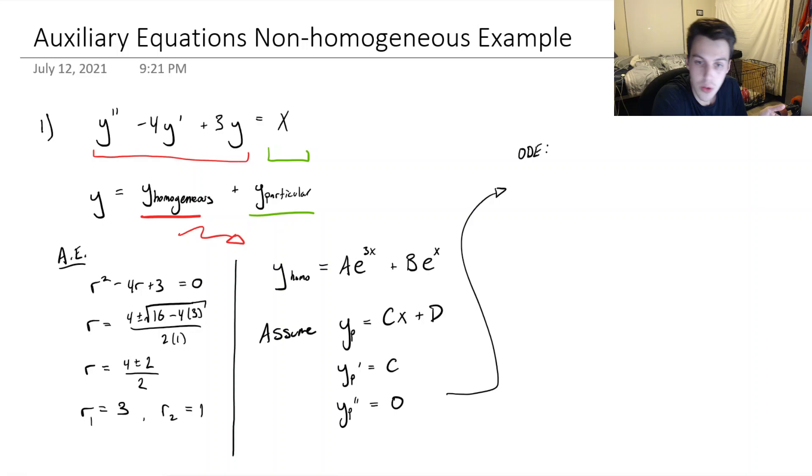if we plug in our y double prime, that is 0. And then we've got minus 4 times C plus 3 times CX plus D. And this is equal to X, our particular solution.